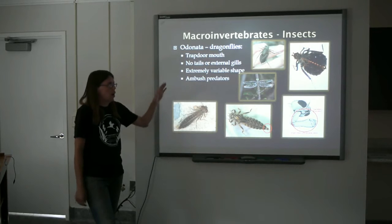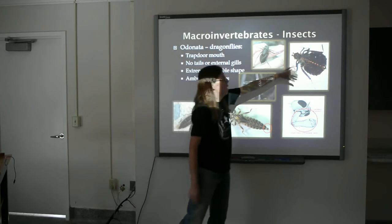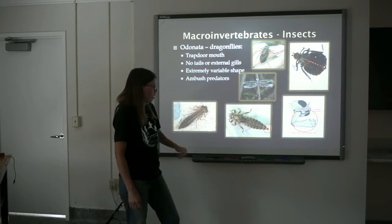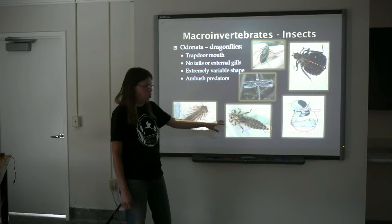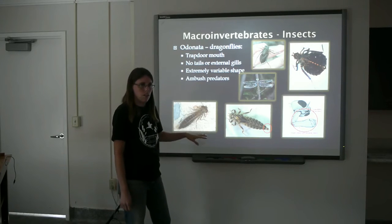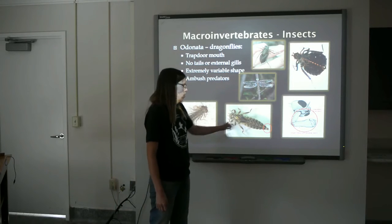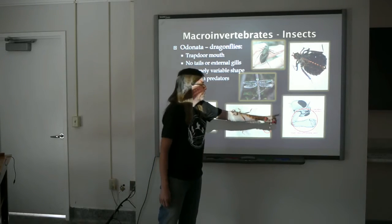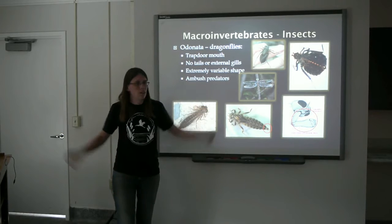Dragonflies can vary a lot in their larval appearance. Some of them are really large and flat like a leaf. Some of them have really long spidery legs. Most commonly, you'll see ones that are a lot more broad than the damselfly. They don't have the three gill filaments off the tail, and no gill plates on the side of the abdomen — not three tails — but they still have this trapdoor mouth. Here's the adult with its wings spread parallel to the surface.